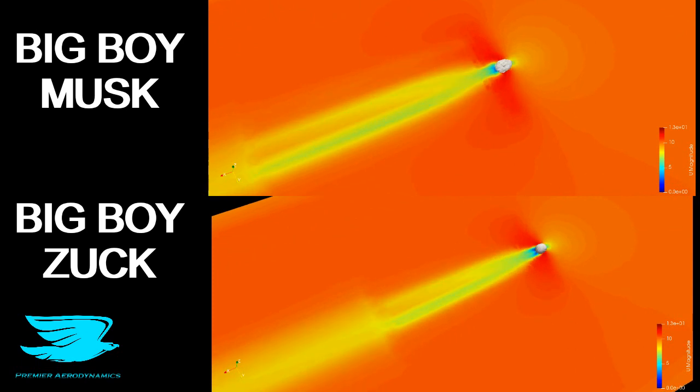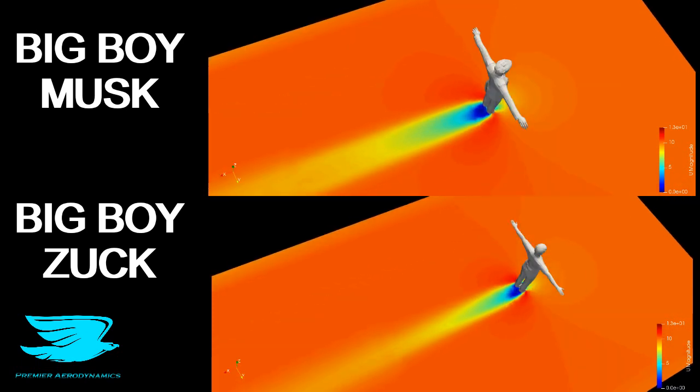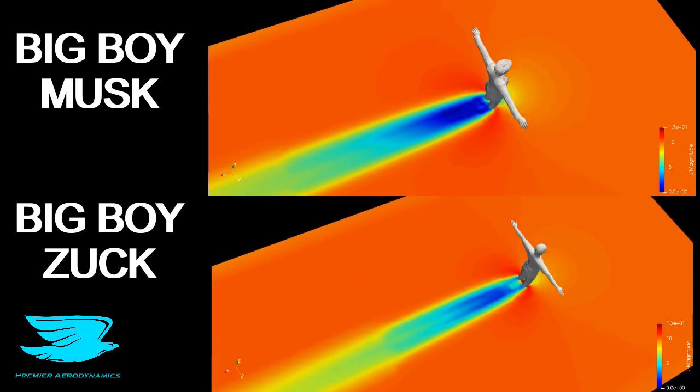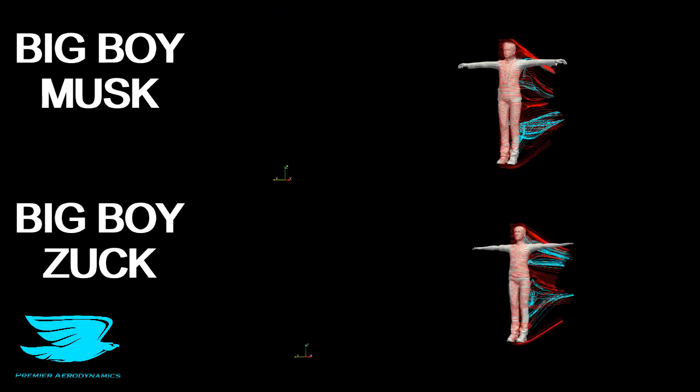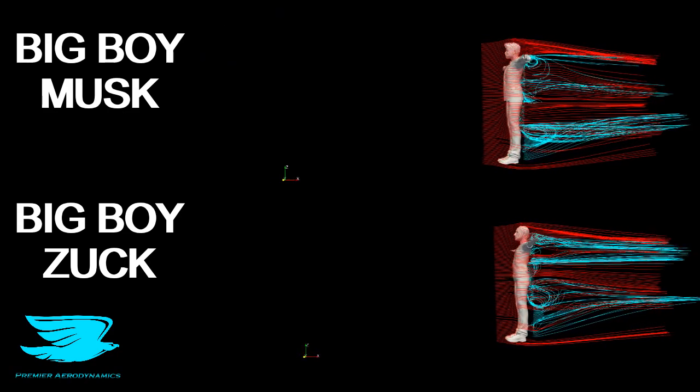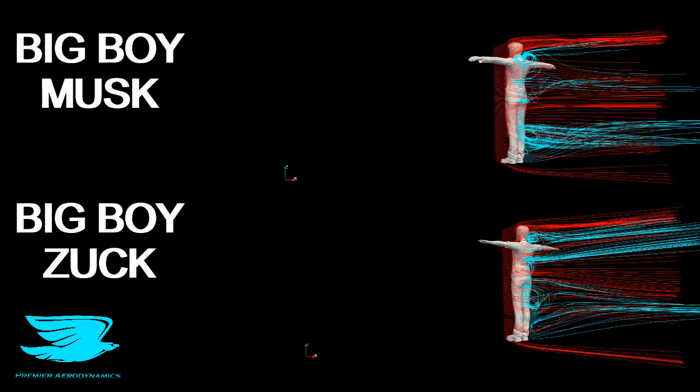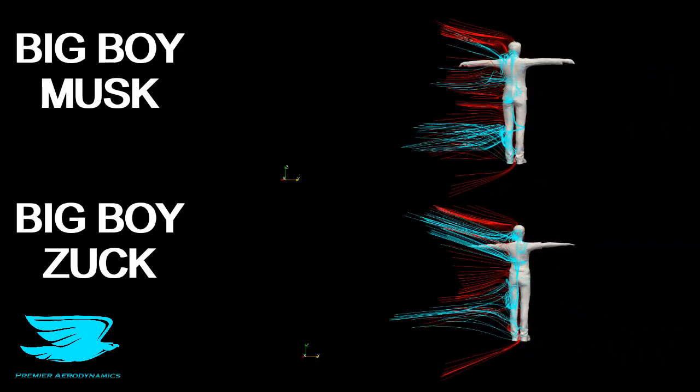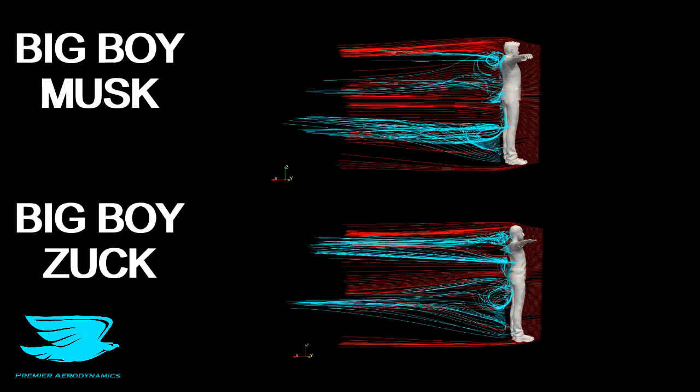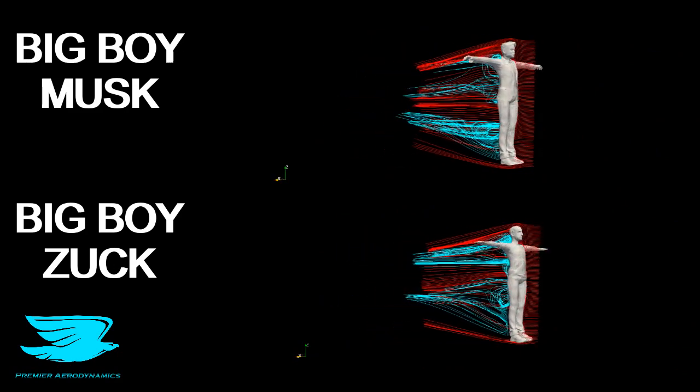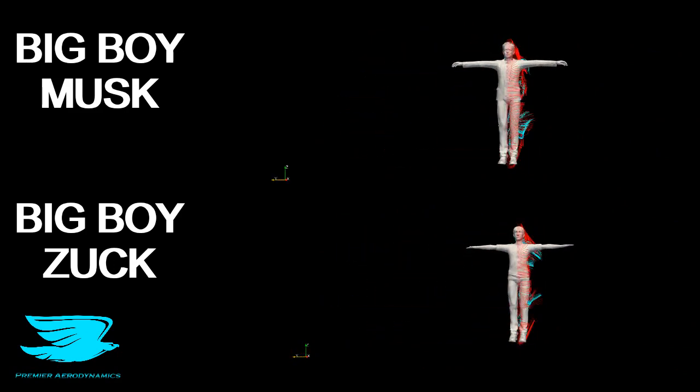In terms of just generally getting around and minimizing drag, you may want to go for more of a Zuckerberg approach. Now we have streamlines of Musk and Zuck. I've done two different colors: the red streamlines come from upstream, the blue ones are from directly behind in the wake. The red ones don't have too many differences between them.